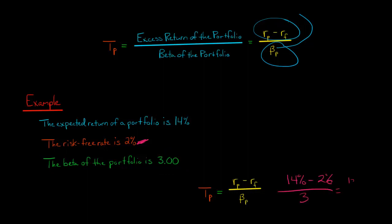We have 12% divided by 3, which equals 4%. So the Treynor ratio of this portfolio would be 4%. Then we could compare that to another portfolio. Let's say there was another portfolio that had a Treynor ratio of 3%. We compare these two, and this portfolio here gives you more reward per unit of systematic risk.